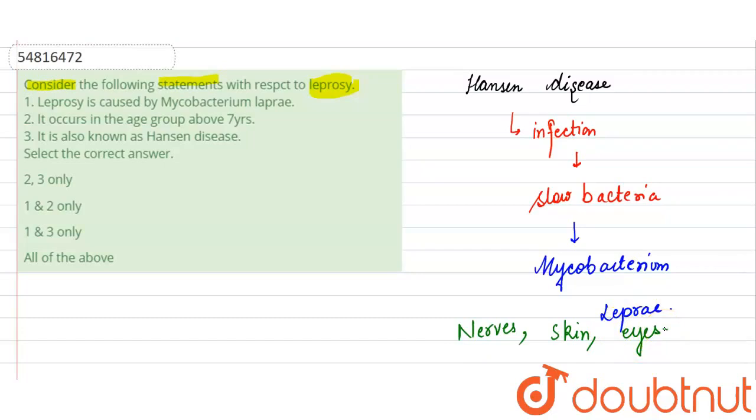Now let's look at the options. The first: leprosy is caused by Mycobacterium leprae. So that would be true. It occurs in the age group above 7 years - that is not the case. It is also known as Hansen disease - this one is true. So here first and third statements are true. It means the correct answer for this question is option C.